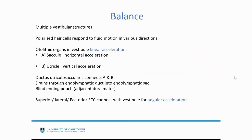When we look at balance, there are many vestibular structures involved — polarized hair cells respond to fluid movement in all directions. The otolithic organs in the vestibule pick up linear acceleration: the saccule specifically for horizontal acceleration and the utricle for vertical acceleration. These two connect via the ductus utriculosaccularis, which drains via the endolymphatic duct into an endolymphatic sac, ending blindly adjacent to the dura. For angular acceleration, we have the superior, lateral, and posterior semicircular canals, which also connect with the vestibule.